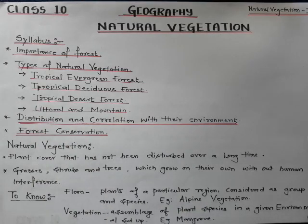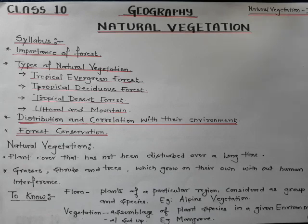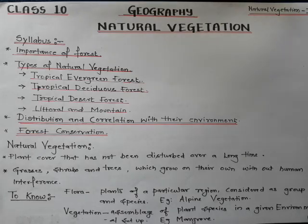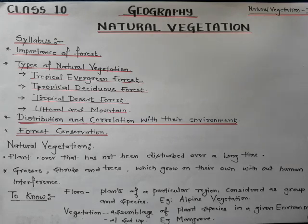Distribution and correlation with their natural environment, and forest conservation. Students, you would have seen trees and plants growing everywhere — maybe walking along the roadside, or traveling on an outskirt. You might have visited places like Bandipur or the Nilgiris and found a stretch of plants and trees. Plants and trees grown by man are not called natural vegetation.